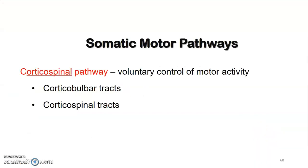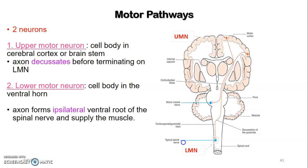We'll start with the somatic motor pathways. We have the corticospinal pathways that are responsible for voluntary control of motor activities. We have corticobulbar tracts and corticospinal tracts — from the cerebral cortex to the nuclei of cranial nerves, and from the cerebral cortex to the spinal cord. There are two neurons involved: an upper motor neuron and a lower motor neuron. The upper motor neuron cell body is in the cerebral cortex or the brain stem and its axon usually decussates before terminating on the lower motor neuron, while the lower motor neuron has its cell body in the ventral horn and forms the ipsilateral ventral root of the spinal nerve that supplies the muscle.